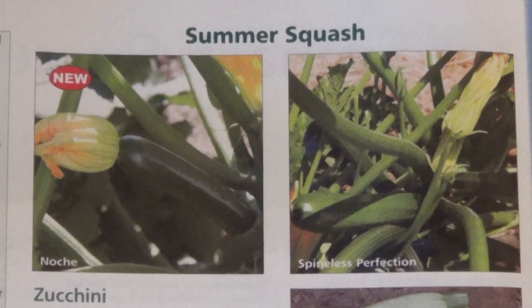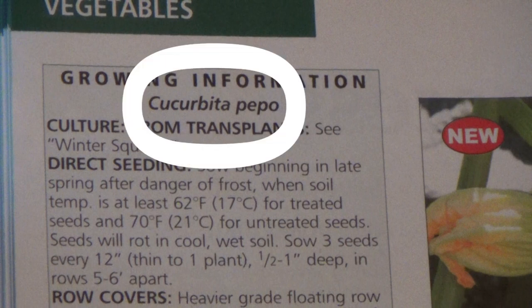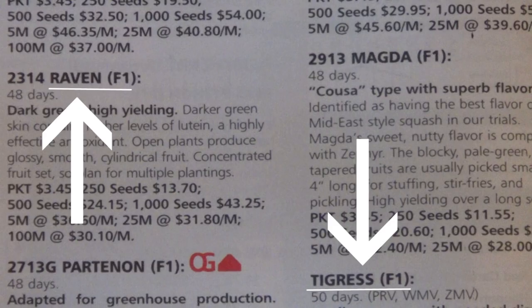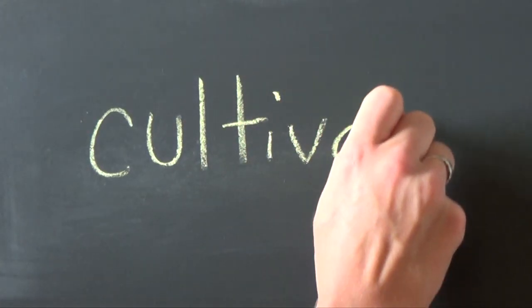So if you were wanting a new summer squash to plant in your garden, you'd look up summer squash in your seed catalog. You'd then look for the italicized scientific name, Cucurbita pepo. And you might also notice some fun names by each one, like Raven, Tigress, or Sunbeam. These are the names given to each cultivated variety, or cultivar.